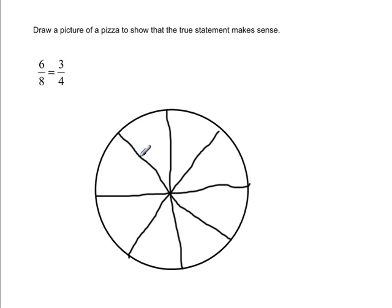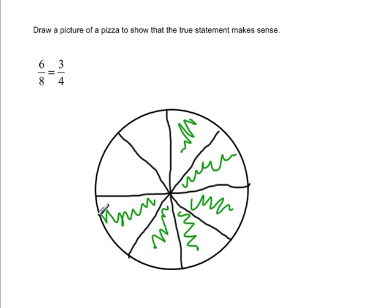But we can see we basically have a pizza cut up into 8 equal portions. So if I'm considering 6 of those 8, let's shade in 6 eighths. So there's 1, 2, 3, 4, 5, 6 eighths.